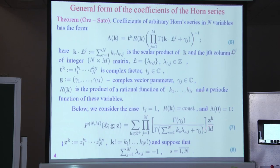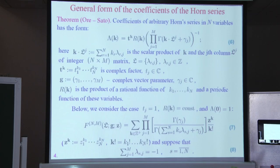We will consider a particular case of these coefficients and Horn series, which does not essentially confine the generality of our considerations. Namely, we prescribe some normalization conditions and consider the series 7. It differs from the previous coefficient 6 by the presence of the factorial k, meaning the matrix L contains some unit sub-matrix. Besides, we suppose that conditions 8 hold, which guarantee that the series 7 has a finite domain of convergence.